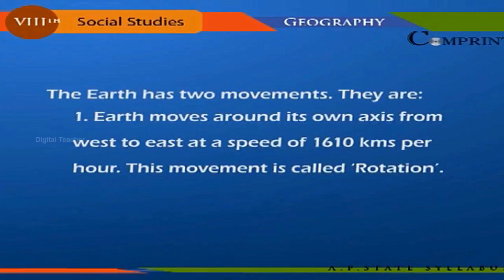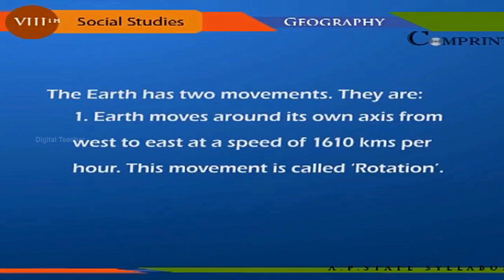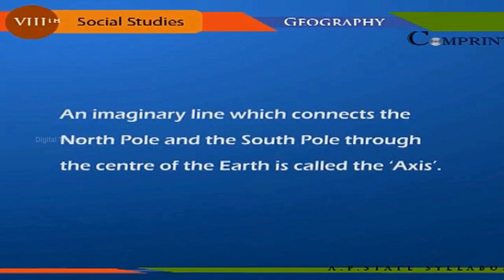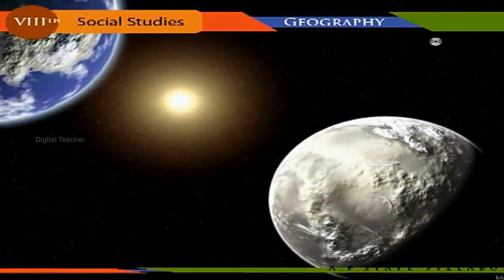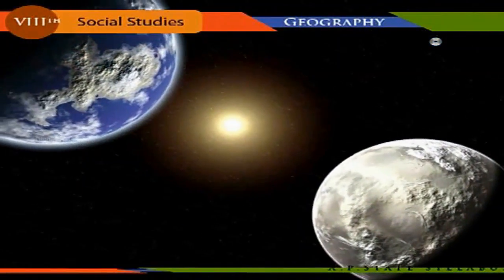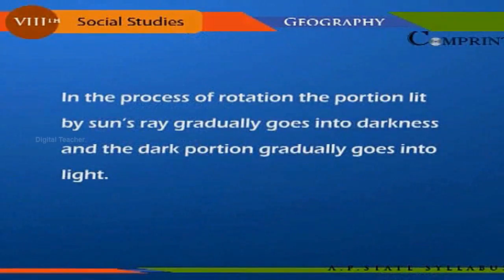The earth has two movements. First, it moves around its own axis from west to east at a speed of 1600 kilometers per hour; this movement is called rotation. An imaginary line which connects the north pole and the south pole through the center of the earth is called the axis.